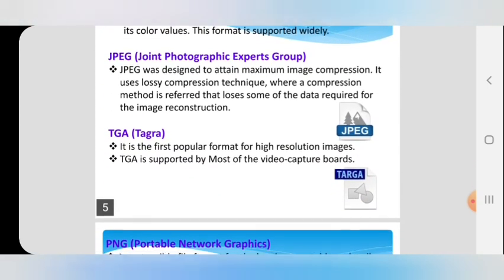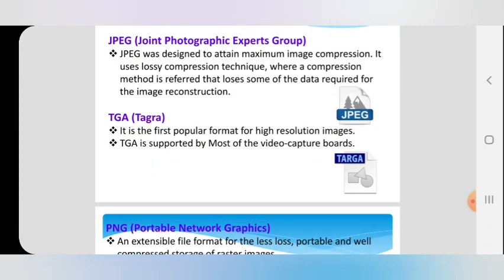The next format is JPEG — Joint Photographic Experts Group. It was designed for maximum image compression. It uses a lossy compression technique, where the compression method loses some of the data required for image reconstruction. Nowadays, in mobile phones or digital cameras, pictures are stored comfortably in JPEG format because of its maximum image compression. It supports both lossy and lossless compression.